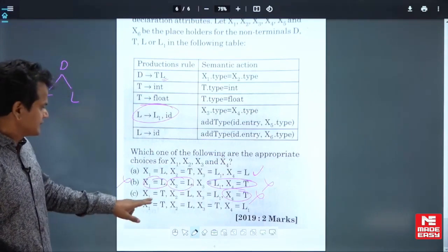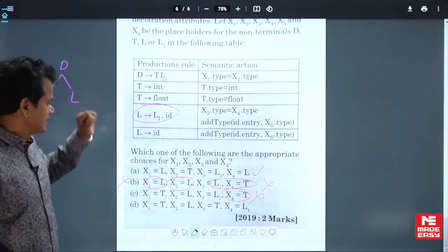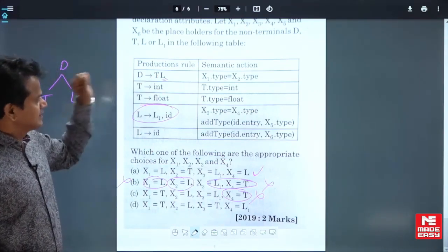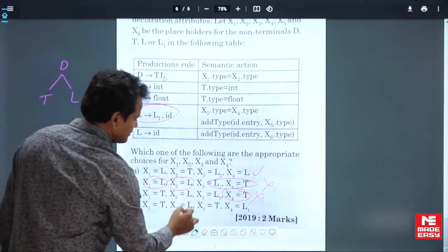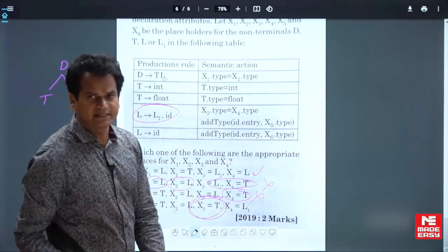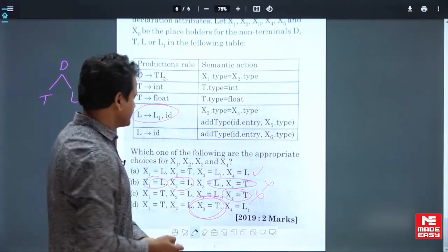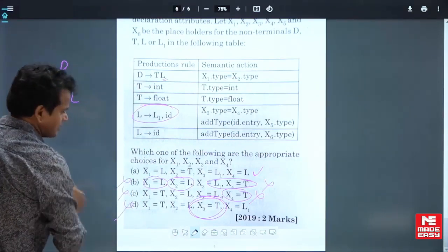Now come to D. x1 equal to T, yes it can be. x2 equal to L, yes it can be. Then x3 equal to T. How, when there is no T in the production, can x3 be T? Therefore, B, C, D are not correct.